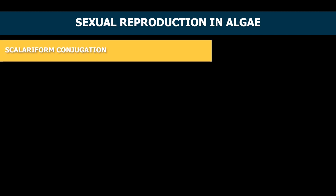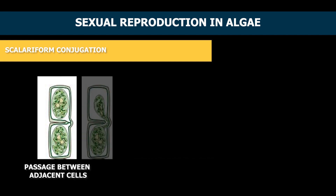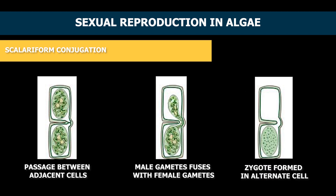Sexual reproduction can be of two types. 1. Scaliform conjugation. In this process, male and female gametes are obtained from different filaments in the same algae. At the microscopic level, algae are formed by a chain of filaments. During scaliform conjugation, filaments with male and female gametes get connected and a new plant is formed.